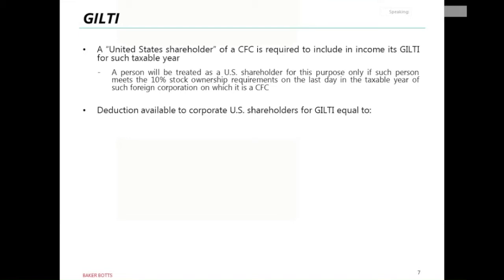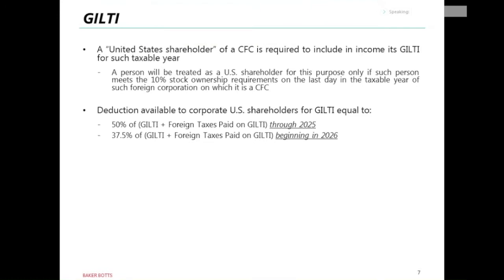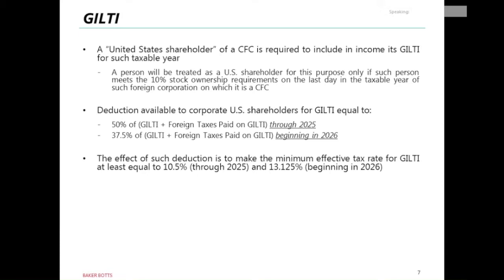As we get into GILTI, there's a deduction available to corporate U.S. shareholders equal to 50% of GILTI plus the gross-up for foreign taxes through 2025, and then 37.5% beginning in 2026. The effect of such deduction is to make the minimum effective tax rate for GILTI at least equal to 10.5% through 2025 and 13.125% beginning in 2026.